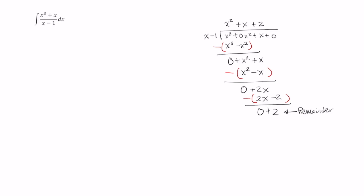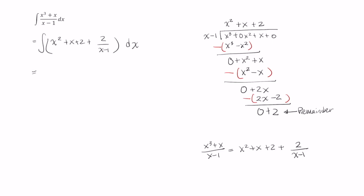From this long division, I know that x cubed plus x divided by x minus 1 is equal to x squared plus x plus 2, plus our remainder of 2 divided by x minus 1. So let's go ahead and rewrite this integral. This evaluates to x cubed over 3 plus x squared over 2 plus 2x plus 2 times the natural log of x minus 1, plus a constant C.